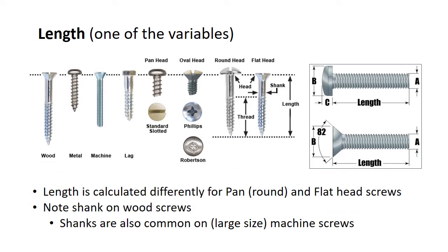Looking back at those variables, notice that the flat head screw length is measured from the top of the fastener to the bottom. For round head, pan head, or similar, you measure from the working surface to the bottom. The length is determined from the shelf of a pan head but from the top of a flat head. You'll also see there are shanks, threaded parts, and other features to consider.